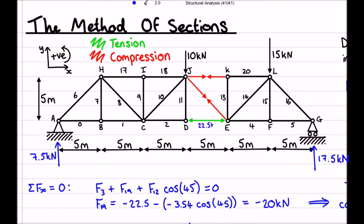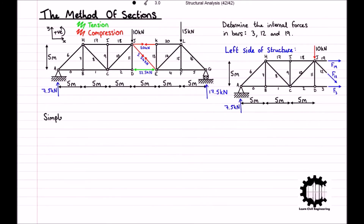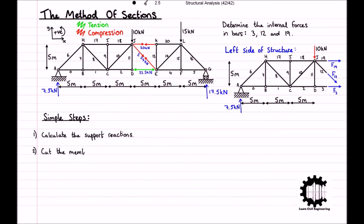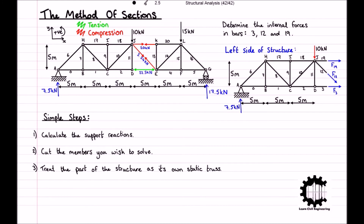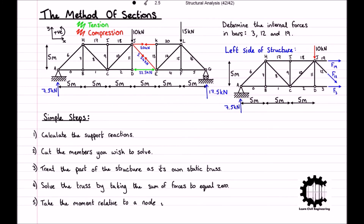Writing these forces onto the diagram gives a visual representation of the results. The method can be summarized in simple steps: first, calculate the reactions at the supports; then make a slice through the members you wish to solve; treat that part of the structure as its own static truss and solve by setting the sum of forces to zero; and finally take moments relative to a node where more than one unknown member passes through.